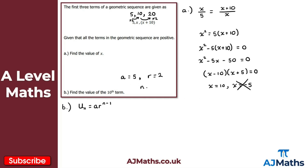With n = 10, u₁₀ = 5 × 2⁹. Putting this into a calculator gives 2,560. That's the 10th term, and the solution to question two. That brings us to the end of this video on geometric sequences — in the next video we'll look at geometric series.